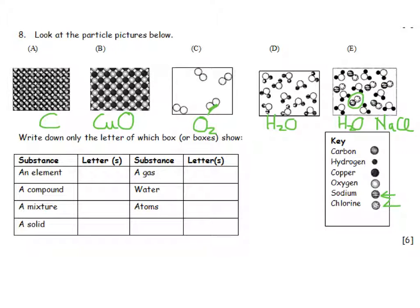So let's see what the questions ask us here. Write down only the letter of which box or boxes show an element. Elements on their own, only one type of atom. So those are the two over there. So box A and box C.